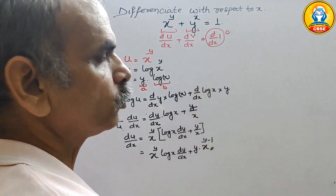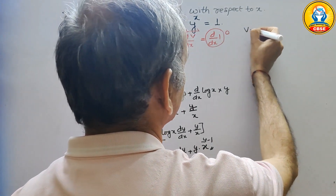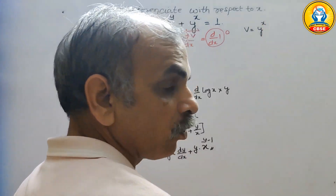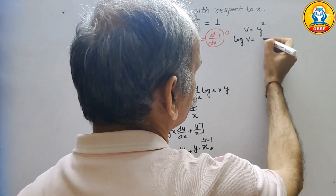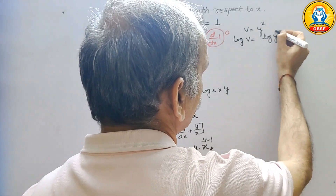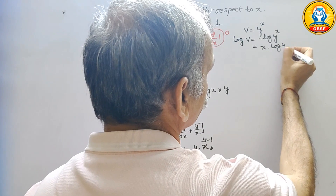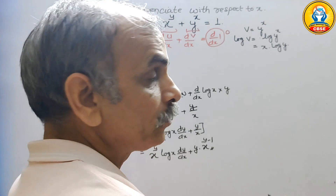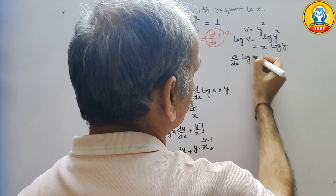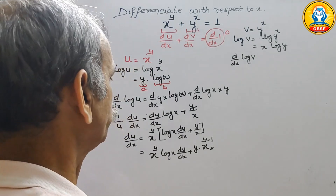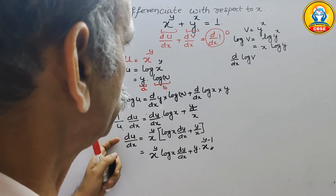Likewise we have to find dv/dx. v is equal to y to the power of x. Taking log on both sides, we get log v equal to log of y to the power of x. x will come in front, giving x into log y.